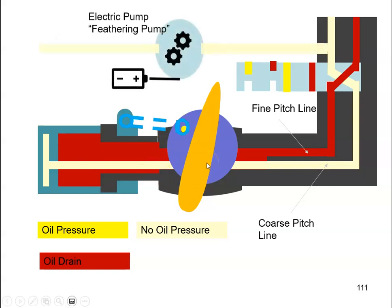The way of doing that is to have an electric pump, a feathering pump. The reason it's electric is because the engine has failed. The engine is not rotating to drive the oil out to the propeller, so we need another mechanism. We're using a DC pump in this case. That's going to take engine oil and pump it. It's going to go under pressure down through the coarse pitch tube.